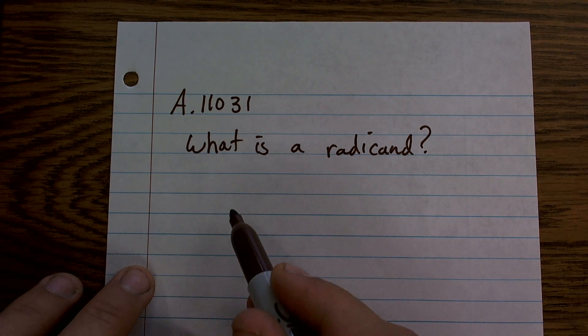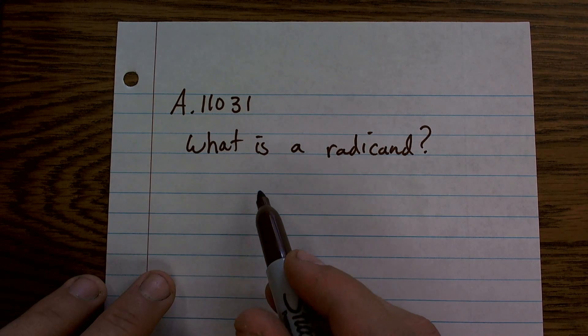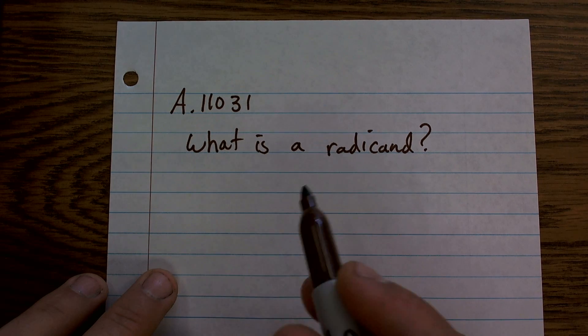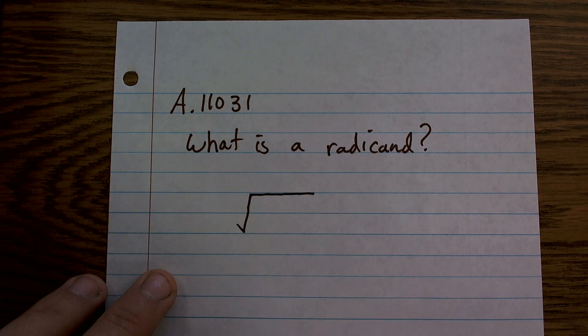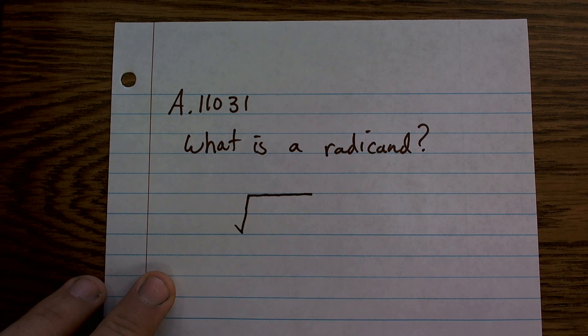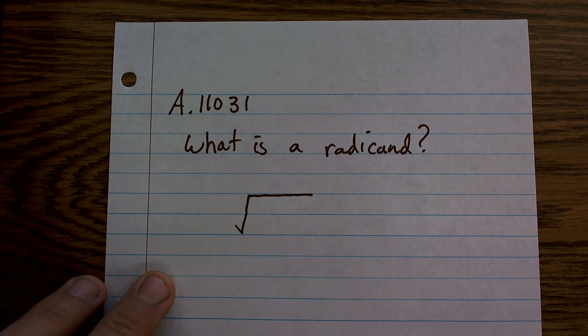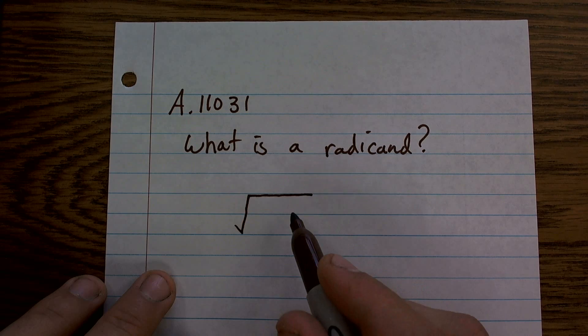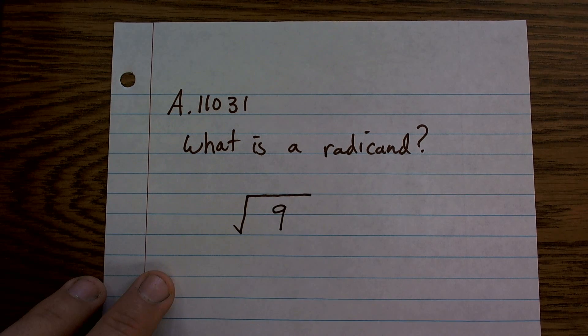So first thing to go through, a radical is comprised of two parts. One is what we call the radical symbol. The next part is what we call the radicand, which means the number inside the radical.